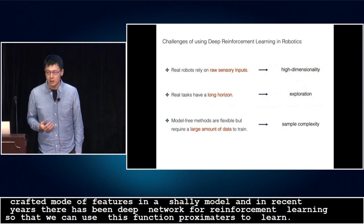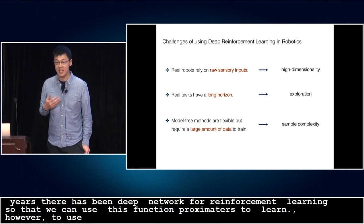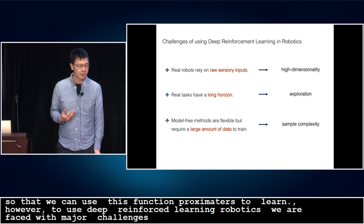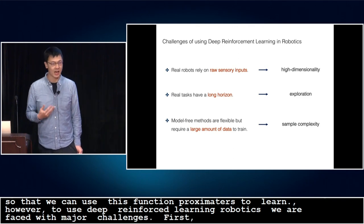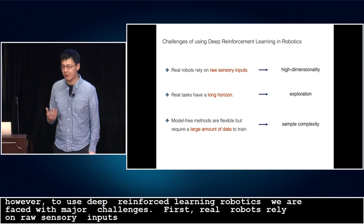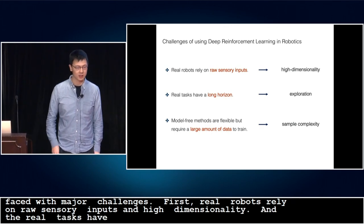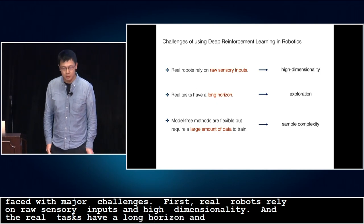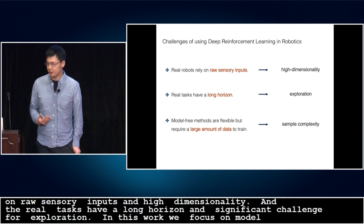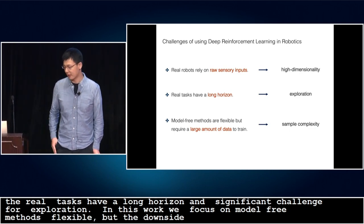However, to use deep reinforcement learning for robotics, we are faced with several major challenges. First, a real robot usually relies on raw sensory inputs that are noisy and high-dimensional. For real tasks, they are usually complex and have a long horizon, which leads to a significant challenge for exploration. In this work, we focus on model-free methods that are flexible, but the downside is they usually require a lot of data to train, so they have very high sample complexity.